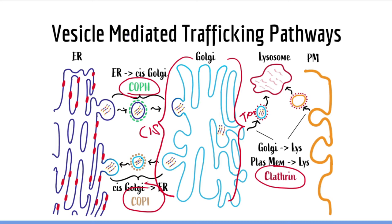Proteins made in the endoplasmic reticulum have five possible destinations, all requiring vesicle-mediated transport: they can go back to the endoplasmic reticulum, they can stay in the Golgi, they can go to the lysosome, they can go to the plasma membrane, or they can be excreted via exocytosis. Proteins sent to the plasma membrane can either become part of the plasma membrane as membrane-bound proteins, or they can be secreted out of the cell through exocytosis. You need to be familiar with the process of vesicular secretion or exocytosis because it is extremely important in physiology.